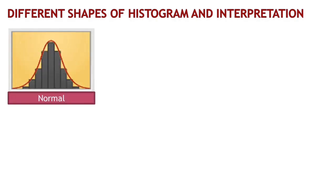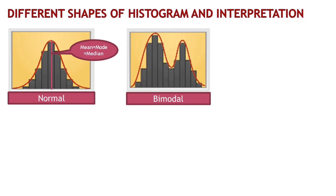Histograms come in various shapes, each having a unique distribution pattern. Let's dive into some common shapes and their interpretations. First, we have the normal distribution. This shape forms a symmetric bell curve, indicating that most data points are concentrated around the mean. It's like the ideal shape often observed in naturally occurring phenomena. Moving to the bimodal shape — as the name suggests, this shape displays two distinct peaks indicating the presence of two different modes in our data. It's like having two stories within one histogram.